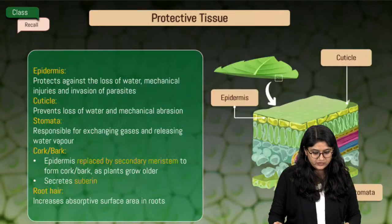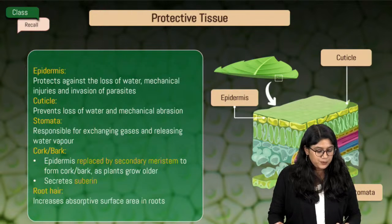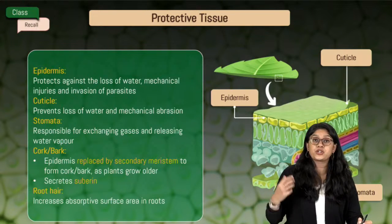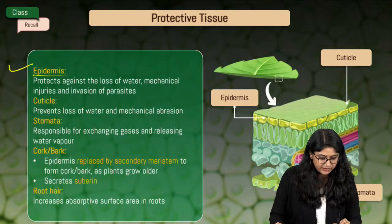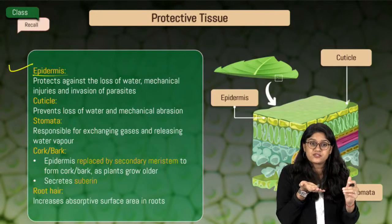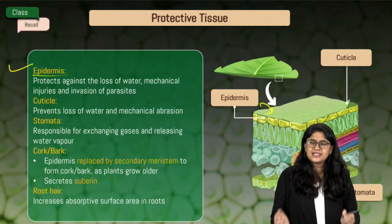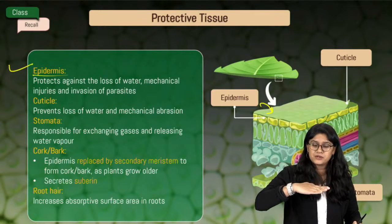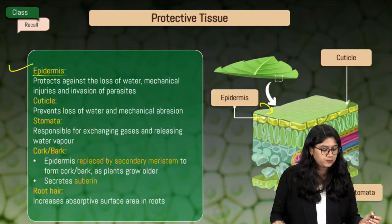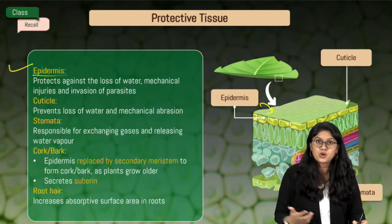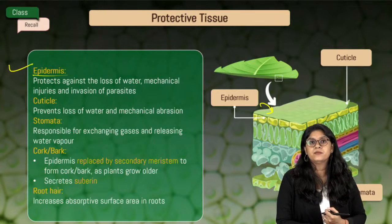Let's move to the next one — we have the protective tissue. In protective tissue we have the epidermis. The epidermis is the outermost or topmost layer present on the leaves, acting as a barrier. We also have different types in the bark. The epidermis helps in protecting from various insects.